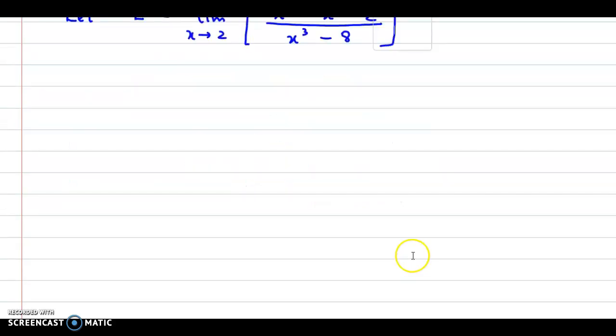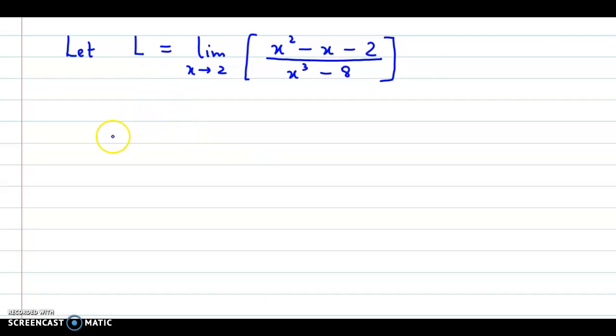Here we could factorize the numerator as well as the denominator. If we consider the numerator x squared minus x minus 2, we could split the middle term as x squared minus 2x plus x minus 2. Taking x common in the first and second terms, we have x times x minus 2 plus 1 into x minus 2. So we have the factors x minus 2 into x plus 1.